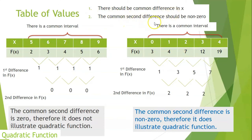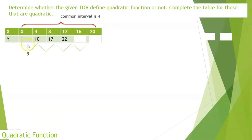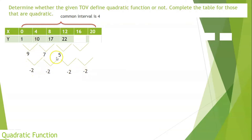Let's have another example. In the values for x, there is a common interval of 4. Getting the first difference: 10 minus 1 is 9, 17 minus 10 is 7, 22 minus 17 is 5. Then the second difference: 7 minus 9 is negative 2, and 5 minus 7 is negative 2 as well. The succeeding intervals would also be negative 2, giving next y-values: 25 and 26. This table of values defines a quadratic function.